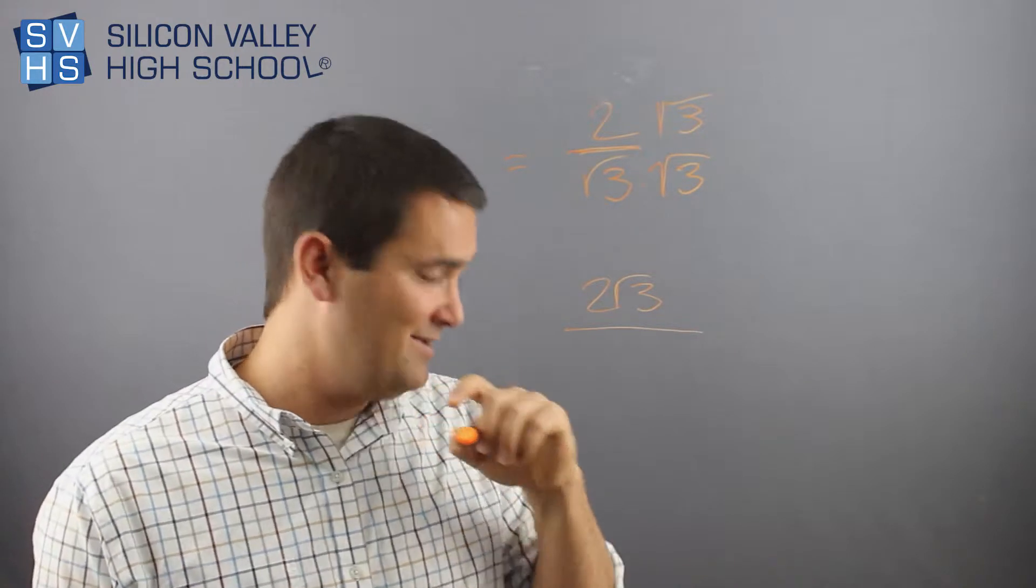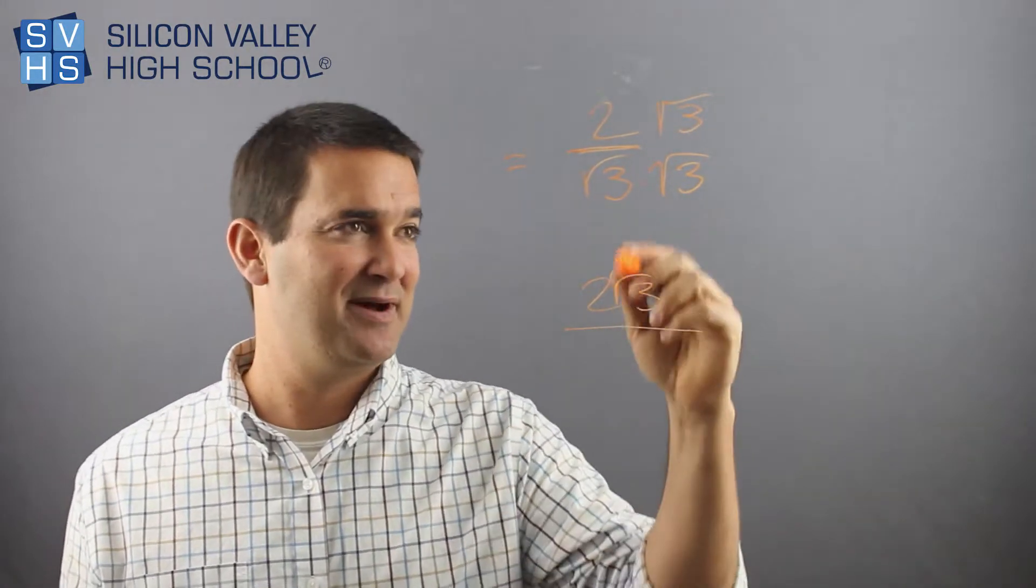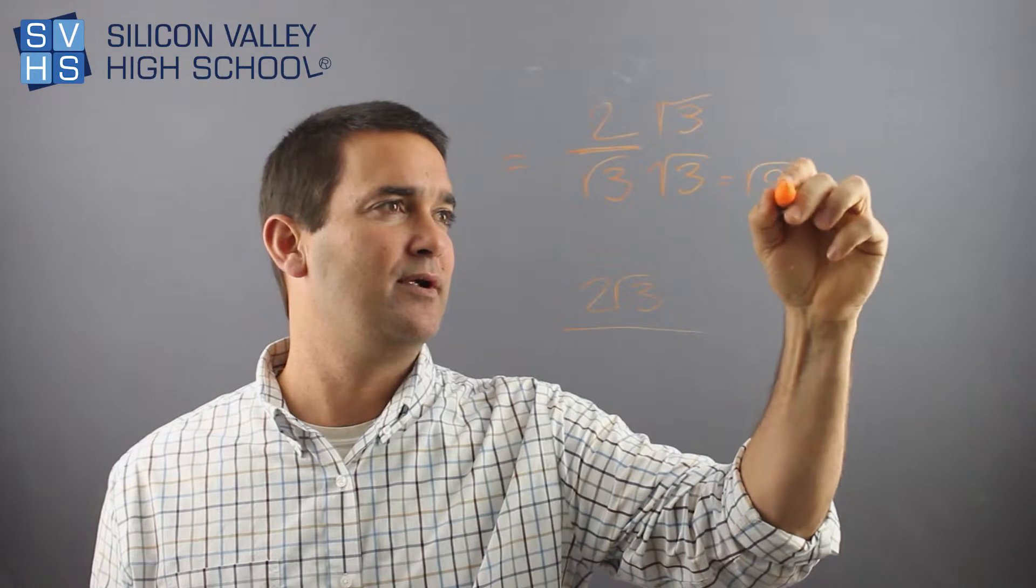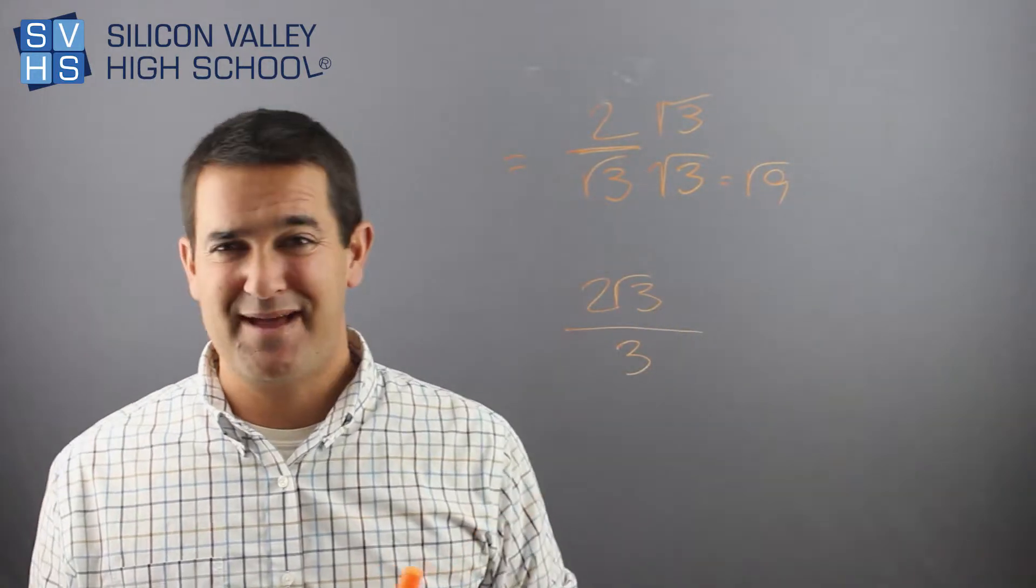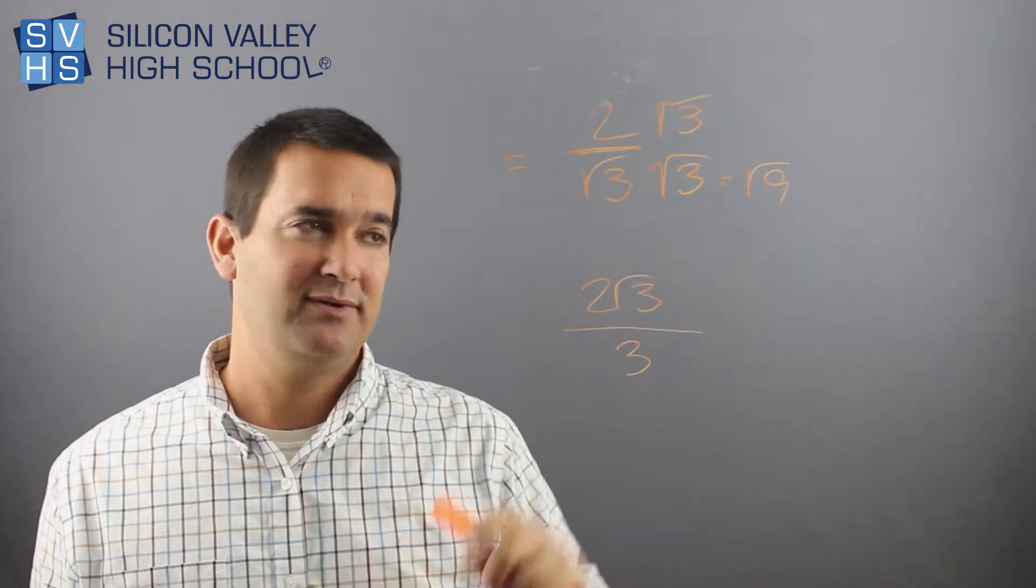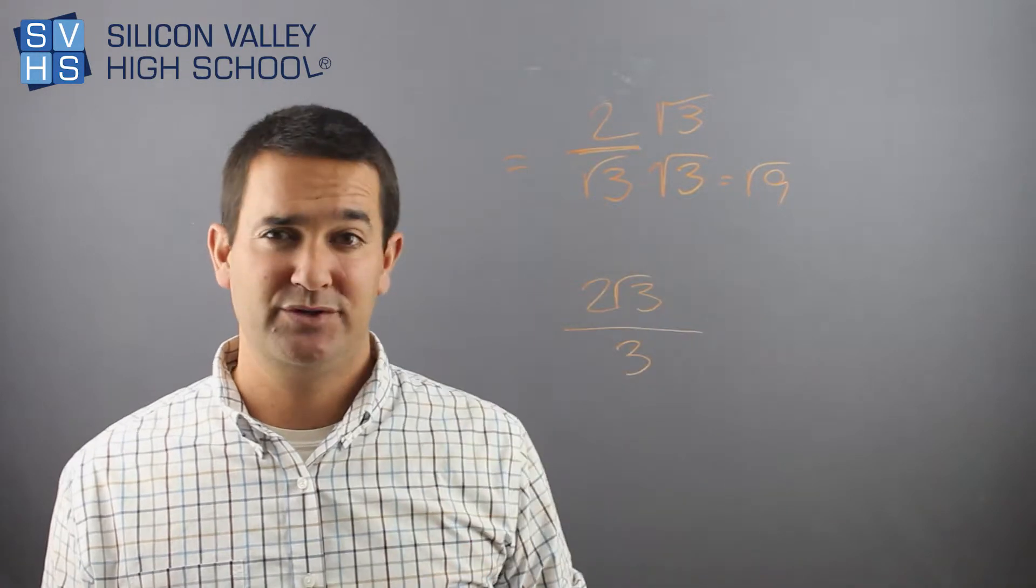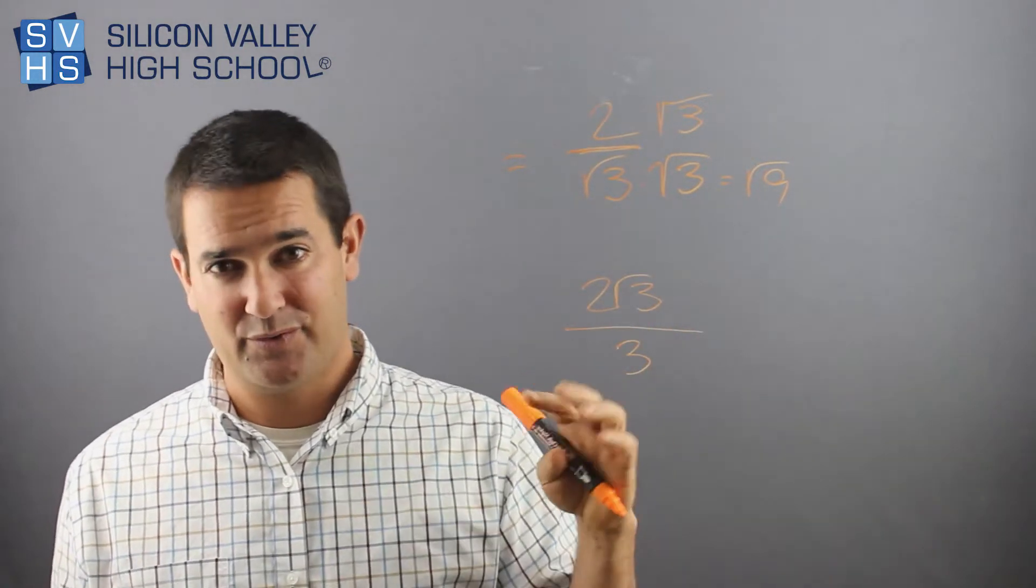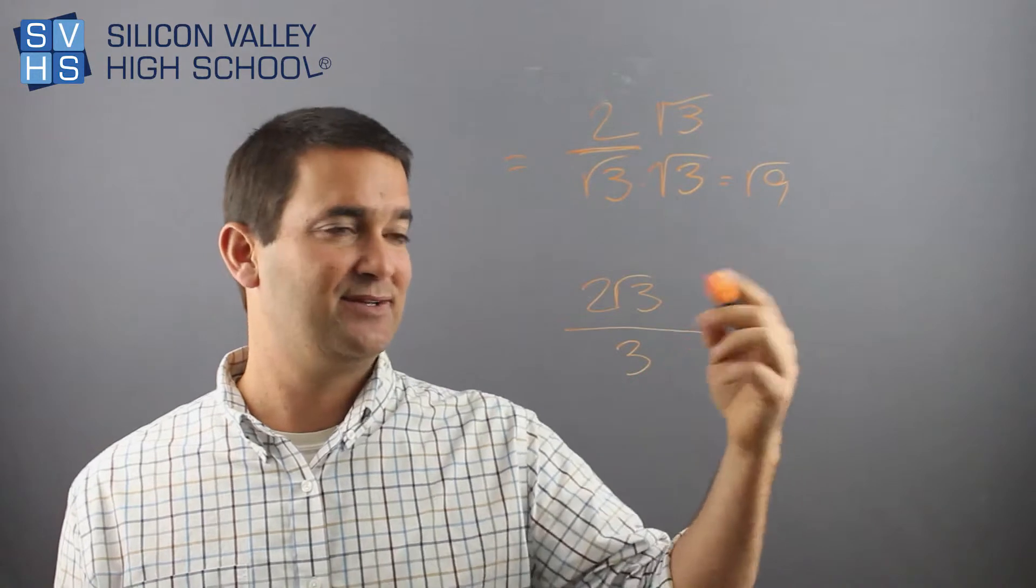So then the bottom, I already kind of gave you the end, but basically that would be root 9 or just 3. And I recommend after you get good at that, don't actually multiply them and find the root. Just know that whenever you multiply two things that are the root of something, the answer is the inside.